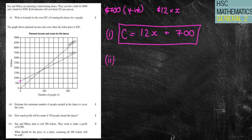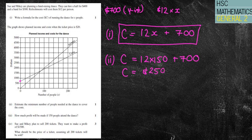Part 2. How much profit will be made if 150 people attend the dance? Well C equals 12 times 150 plus $700. Now remember this will give me what my cost is going to be. So 12 times 150. I'm going to add on my $700 which is my start off costs. My costs are going to be $2500.